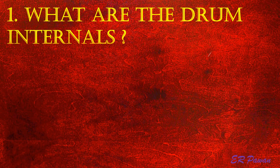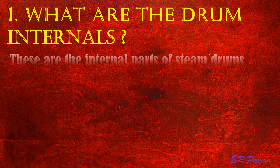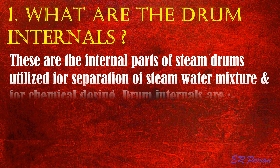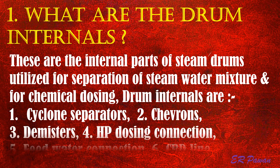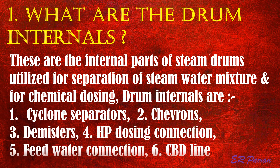Question 1: What are the drum internals? These are the internal parts of steam drums utilized for separation of steam-water mixture and for chemical dosing. Drum internals are: 1. Cyclone separators, 2. Chevrons, 3. Demisters, 4. HP dosing connection, 5. Feed water connection, 6. CBD line.